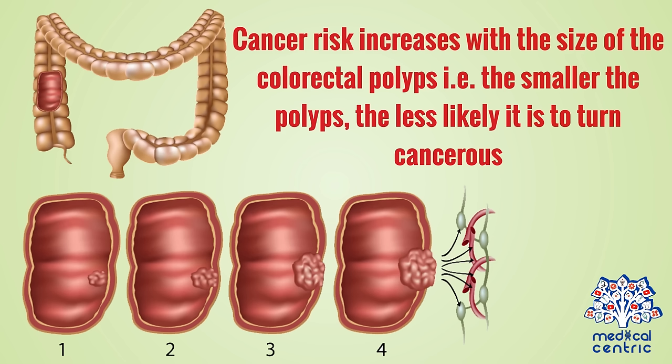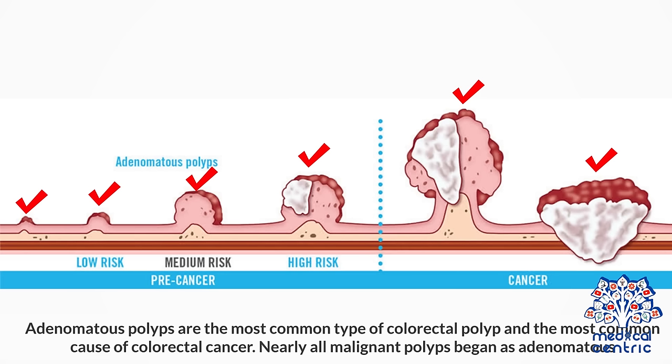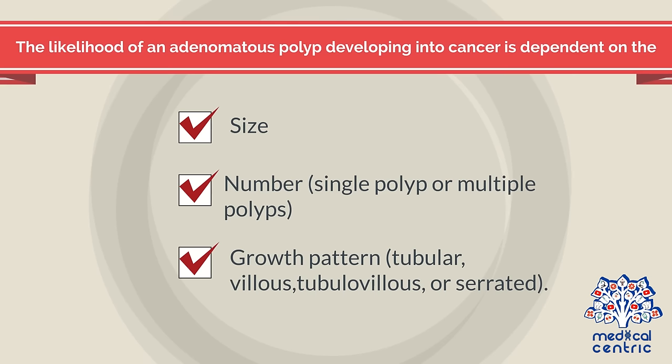Adenomatous polyps are the most common type of colorectal polyp and the most common cause of colorectal cancer. Nearly all malignant polyps began as adenomatous polyps. The likelihood of an adenomatous polyp developing into cancer is dependent on the size, number — for instance, single polyp or multiple polyps — and growth pattern: tubular, villous, tubulo-villous, or serrated.